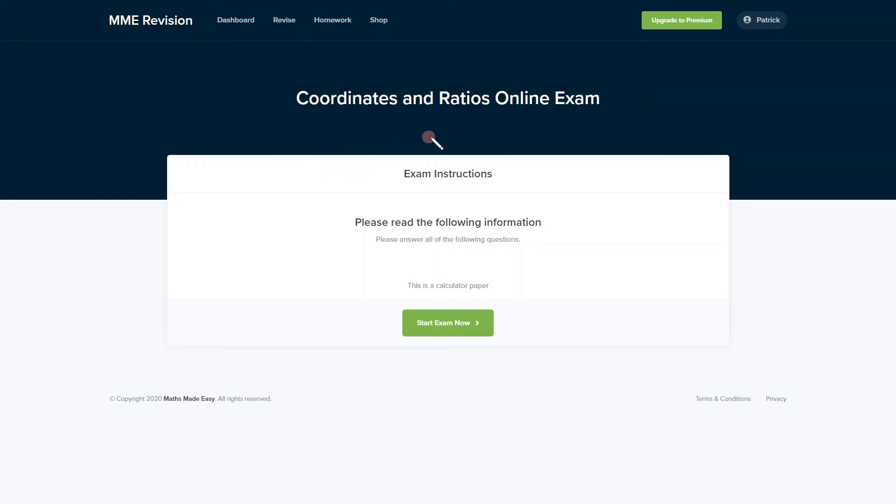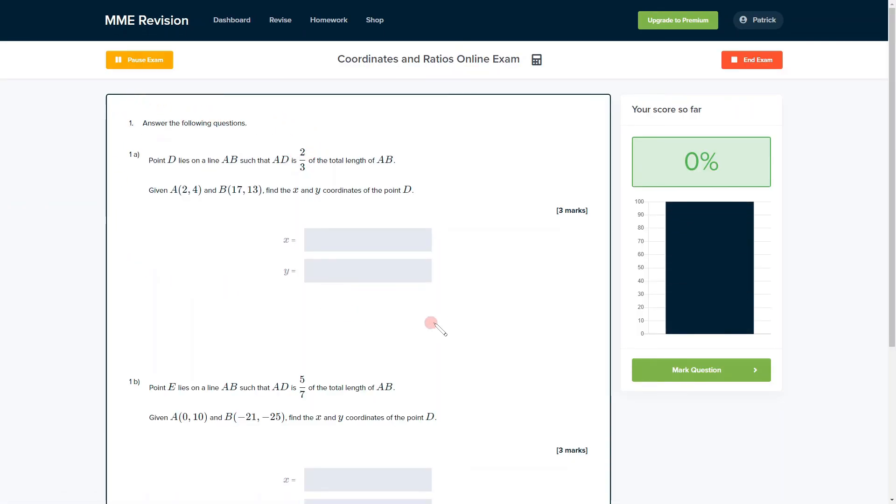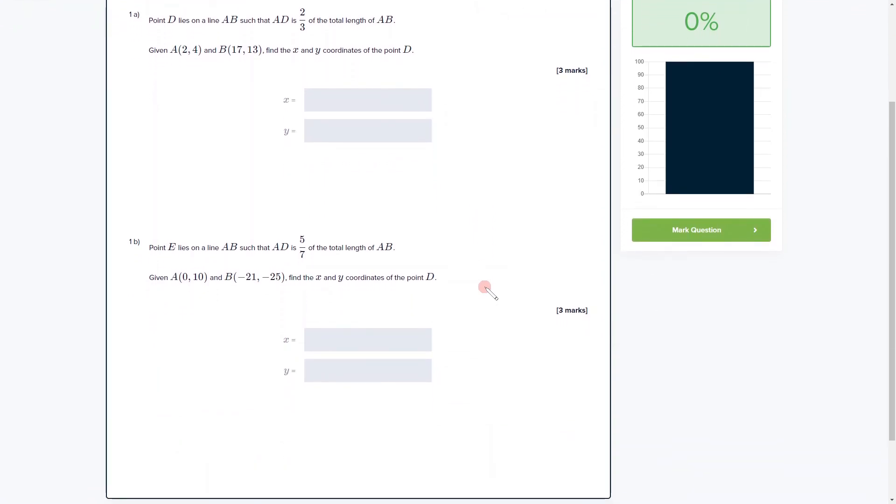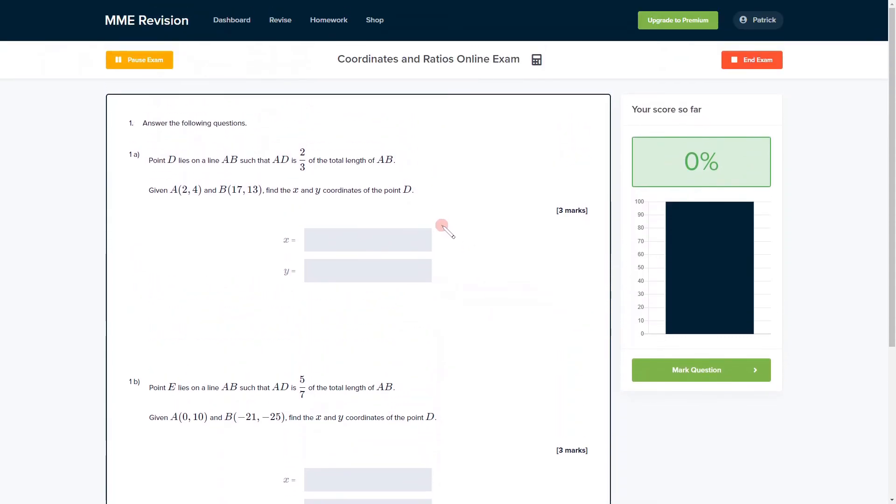If you'd like to practice the coordinates and ratios topic, you can do so with our online exam. If you take the test, you'll find loads of different questions, there's a variety of different question types, all of which are in an exam style, and you get instant feedback on each and every one so you can keep track of the areas that you need to improve on. If you're interested, then click the link below.